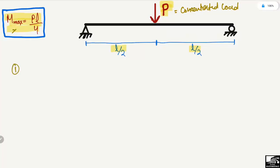There are two methods to prove this maximum moment. The first one is a more simple and easy method, and the second will be a little bit more complex. In the first method, since the load P is acting at the center of the beam, half of the load will be transferred to each support — so each support takes P/2.